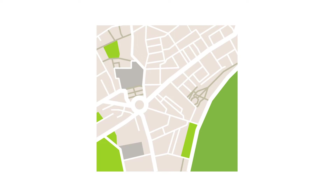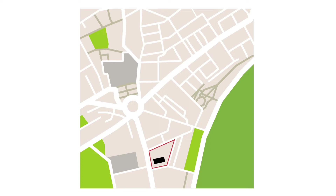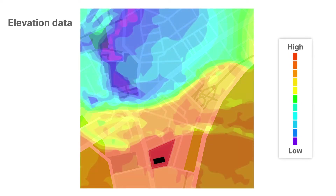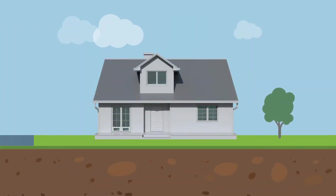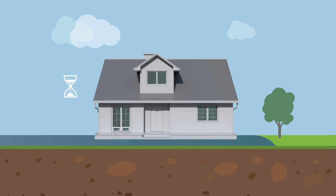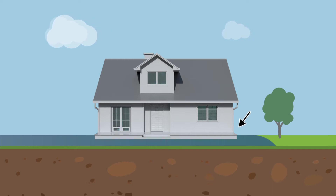The model used by Flood Factor includes publicly available and third-party data to identify property boundaries and the boundary of the building on the property. The boundary or footprint of the building is then used along with publicly available elevation data for the area to determine the likelihood of water on the ground reaching the lowest point of the home's footprint. It's important to note that water reaching this boundary doesn't necessarily equate to water entering the home. How quickly the water reaches the footprint, how long it stays, and the home's foundation type have a lot to do with the actual damage the home may experience.